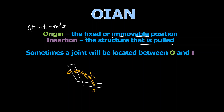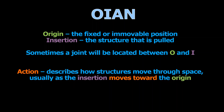That type of action — moving the insertion closer to the origin — is often called a flexion, and we'll get into actions more in the next talk. If we did the opposite and switched the origin and insertion, we would have an extension. Action is the term for how the structures move through space. Flexion is a specific action in which the insertion moves toward the origin, decreasing the angle between the two structures. If we were to extend the angle between the insertion and origin, that would be an extension.